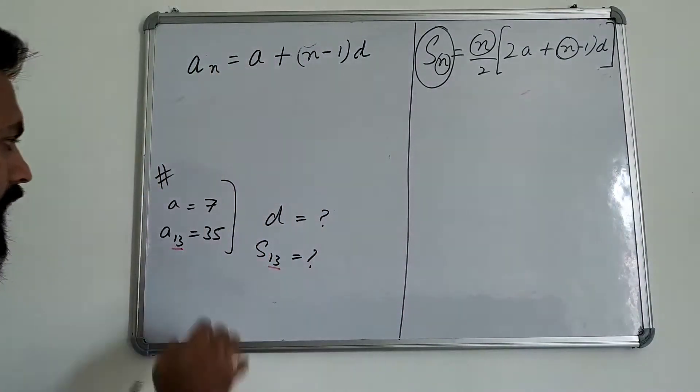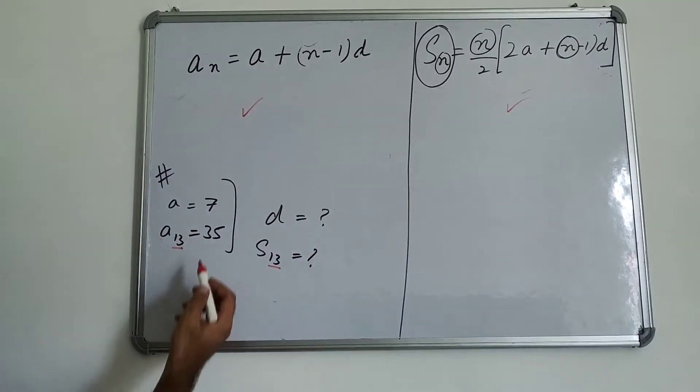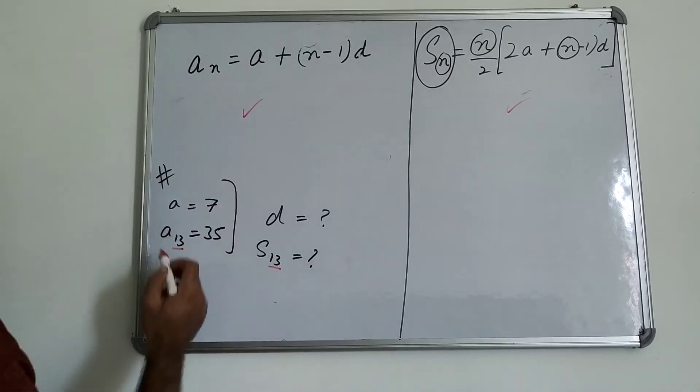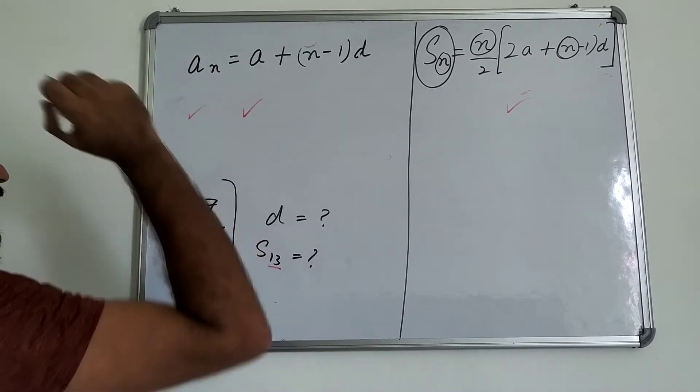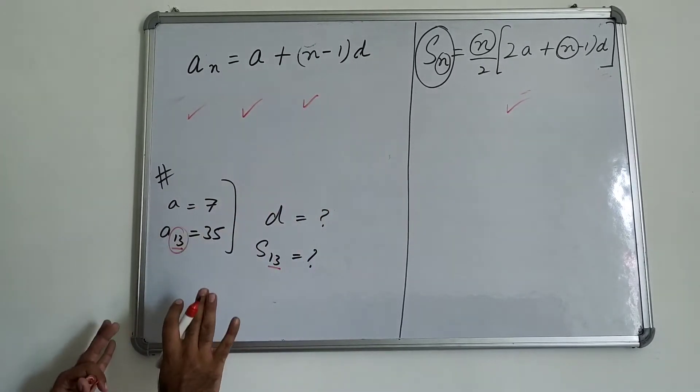How will we do this question? A is 7. I can put a here, I can put a here. After that, a13 is 35. I can put a here, I can put a here. And n as it is, you can see 13. I will show you 13 in this formula, I will show you 13.